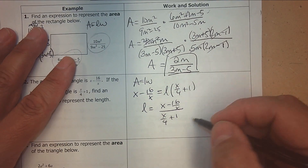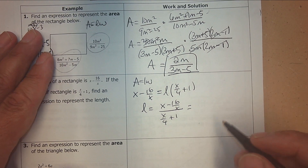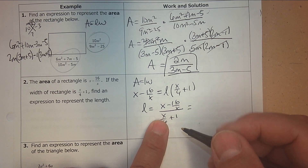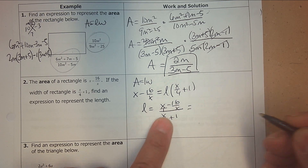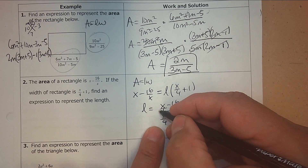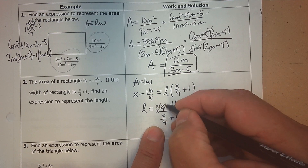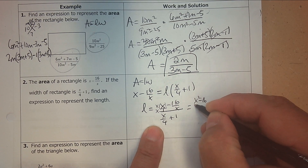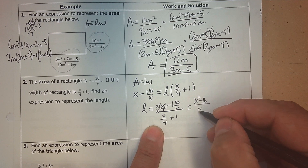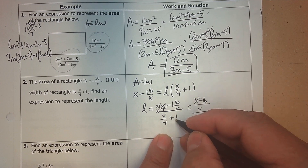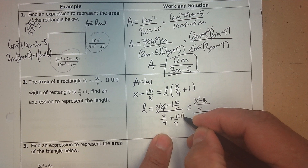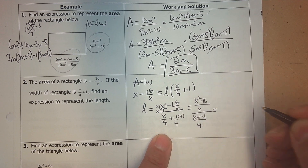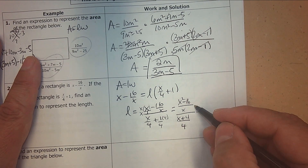I'm going to simplify this for the length. To do that, I need to get one fraction in the numerator, so I need common denominators. I'm going to multiply top and bottom times x, getting x squared subtract 16 over x. Then multiply top and bottom times 4, so I have x plus 4 over 4.